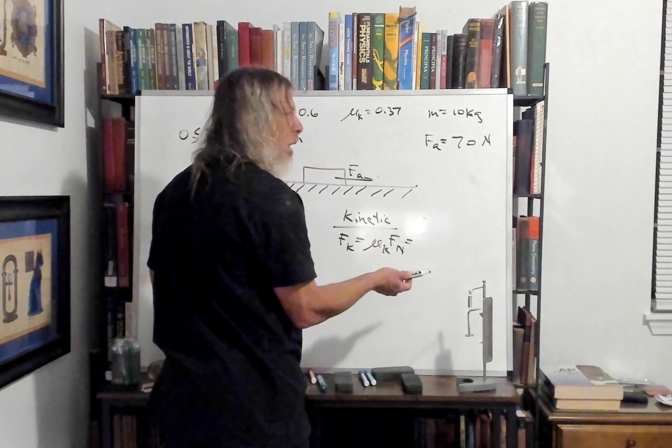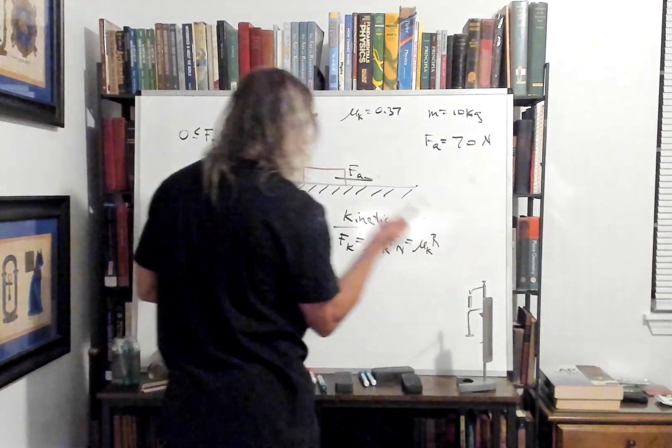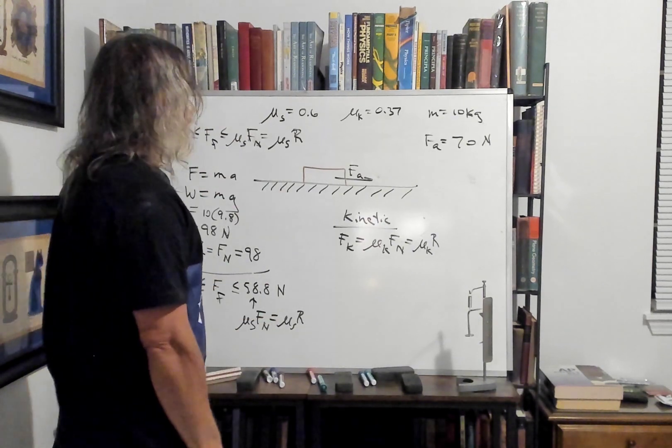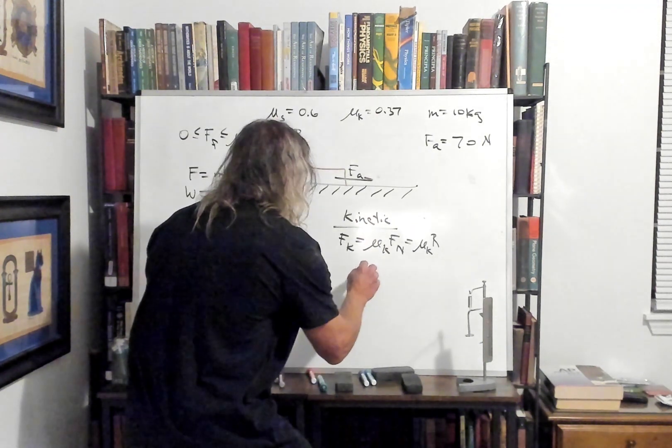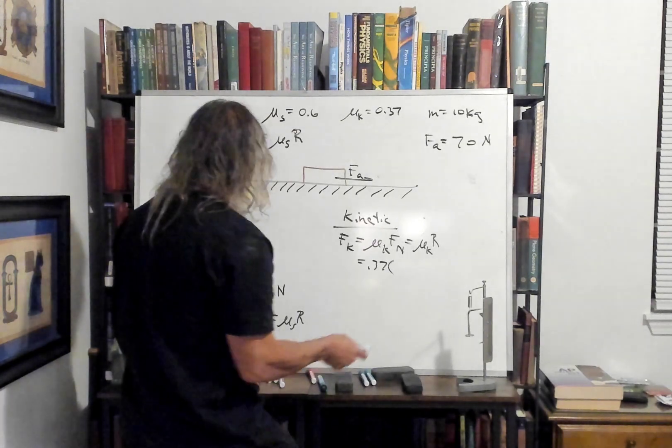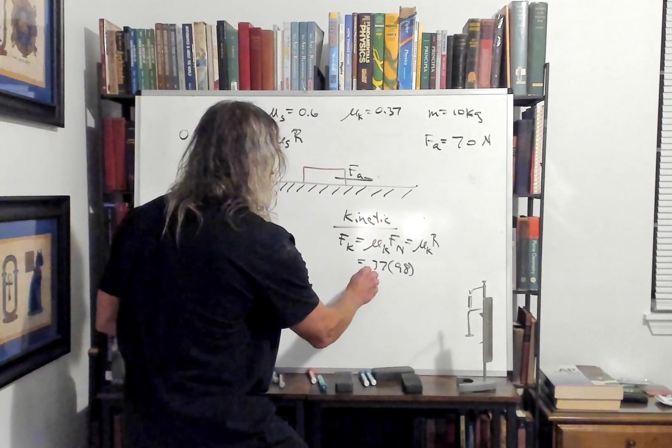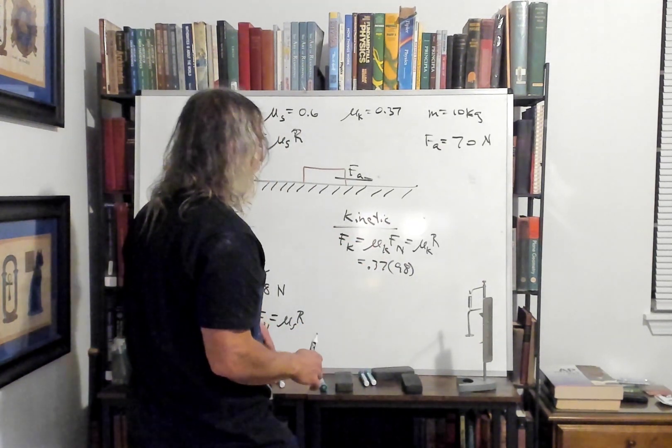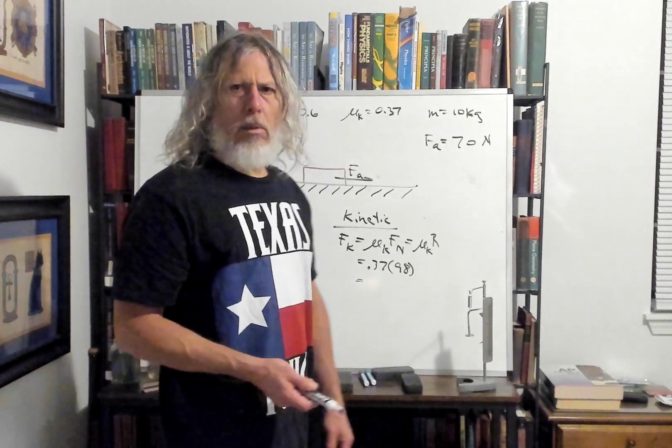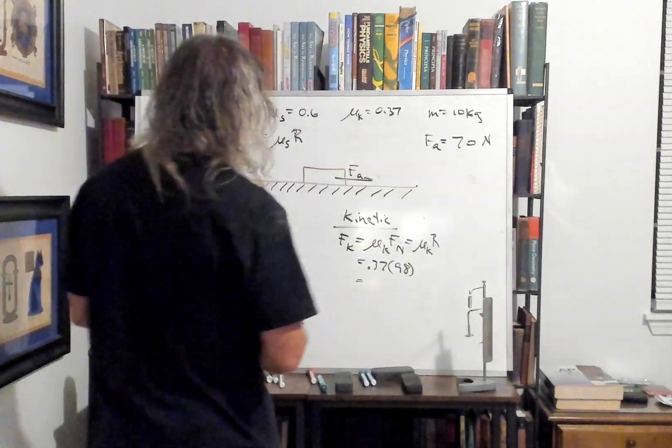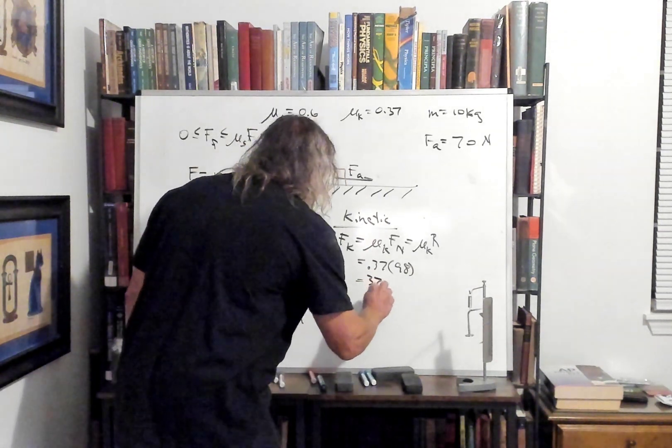So kinetic friction will be kinetic coefficient times the normal, which for IB would be with an R. And it's just moving. So it's just that. Then we do our 0.37 times 98, our coefficient times our weight times the normal force. And we're going to get about 37. I don't know if my calculator handy. So you can do 98 times 0.37 and see what you get. I'm just going to put 37 to round off, 37 newtons.